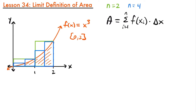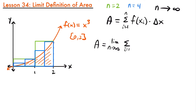Our approximation gets even better with more rectangles. With eight rectangles it would be even better, and with sixteen even better still. The more rectangles we use, the better our approximation will be. So the question is: as n approaches infinity, what will the area under this curve be? That's where the limit definition of area comes from. We're going to find the limit of this formula where n approaches infinity, giving us the area equals the limit as n approaches infinity of the sum from i equals 1 to n of f(x sub i) times delta x.